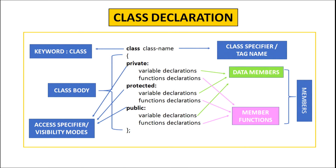The keywords private, protected and public are called the visibility modes or access specifiers. The private and protected keywords specify that all the data members and member functions declared in this section are not visible outside the class — they can only be accessed by the members of the class. However, data members and member functions declared in the public visibility mode can be accessed outside the class, that is by the object of the class. The only difference between private and protected visibility mode is that members of the protected visibility mode can be inherited, while members of the private visibility mode cannot be inherited.